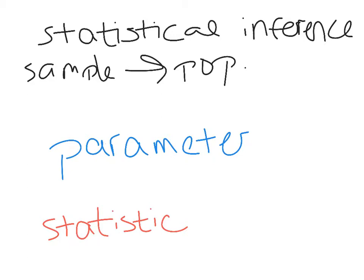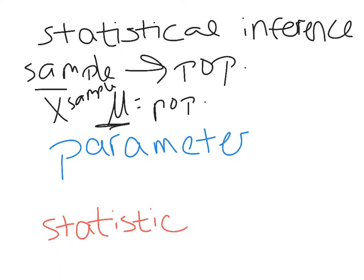We need to know how close the sample mean is to the population mean, and we need to know that X is a random variable. Your vocabulary and notation from this point on are very important. For example, μ and x-bar both mean 'mean,' but they are the mean of two different things — μ is the mean of the population, and x-bar is the mean of the sample. Using the wrong one in free response will cost you points.